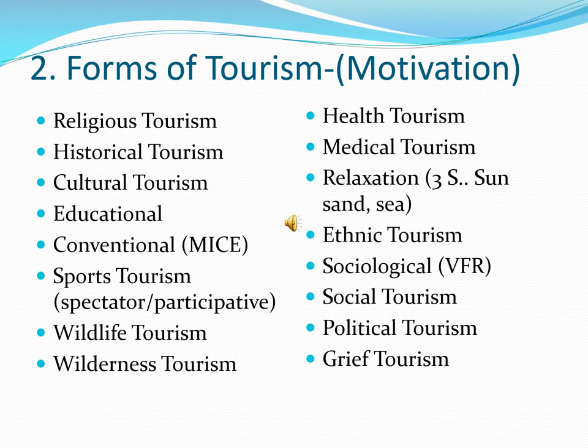Relaxation tourism is based upon the three S's — sun, sand, and sea — primarily to recuperate your body and mind. Ethnic tourism is going to places to understand where your forefathers came from, where you have your roots. Sociological tourism, also identified as VFR tourism — Visiting Friends and Relatives — is related to your social bonds: going to meet friends, family, attending weddings and functions.